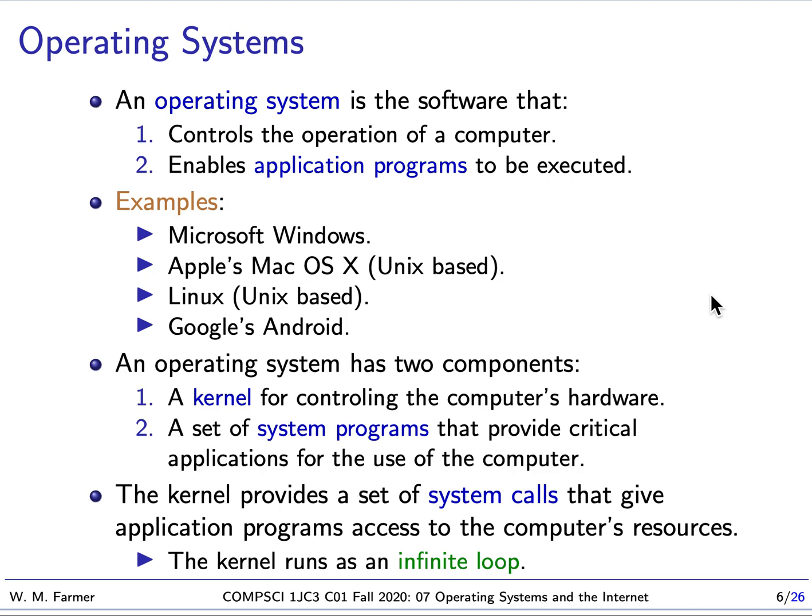There have been many operating systems written in the past, but today most computers use a very small number. The most important examples are Microsoft Windows, Apple's Mac OS X, Linux, and Google's Android. It's important to note that Apple OS X and Linux are both based on Unix — they're really Unix-style operating systems — and there are many other Unix operating systems as well.